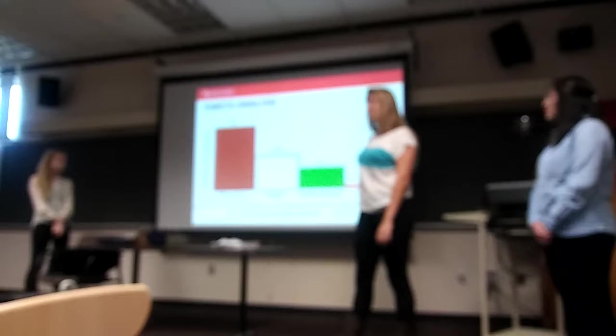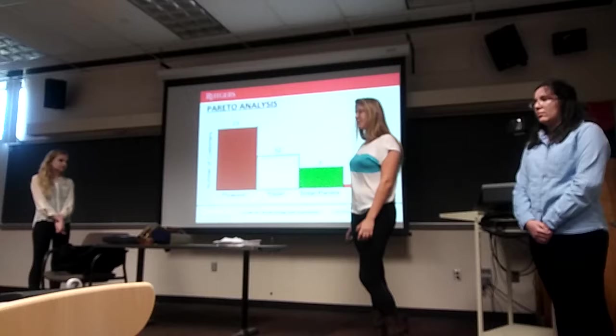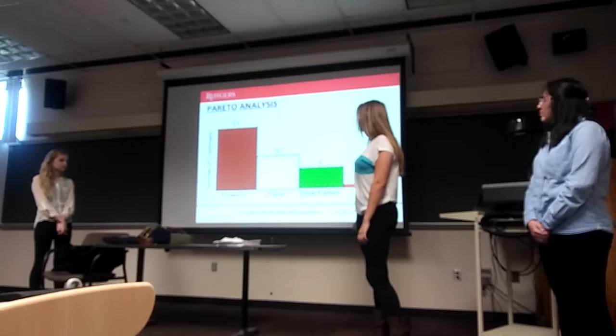This is a Pareto analysis with the number of customers and the type of product ordered. We assumed that the number of customers and products ordered correlates to which type of product. Plywood is the most prominent, followed by paper and solar panels.